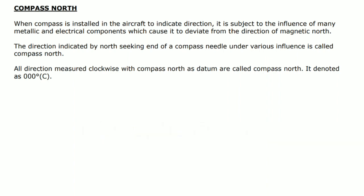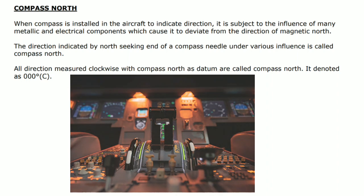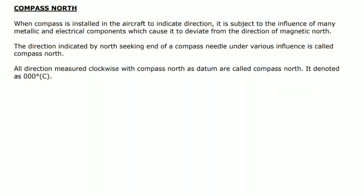For example, if you bring a compass outside of the aircraft, it will indicate magnetic direction because there is no metallic or electrical field. But once we install the compass in the aircraft, the many metallic parts of the aircraft cause compass deviation from its original position. We call this compass direction, and this direction is different from magnetic north.